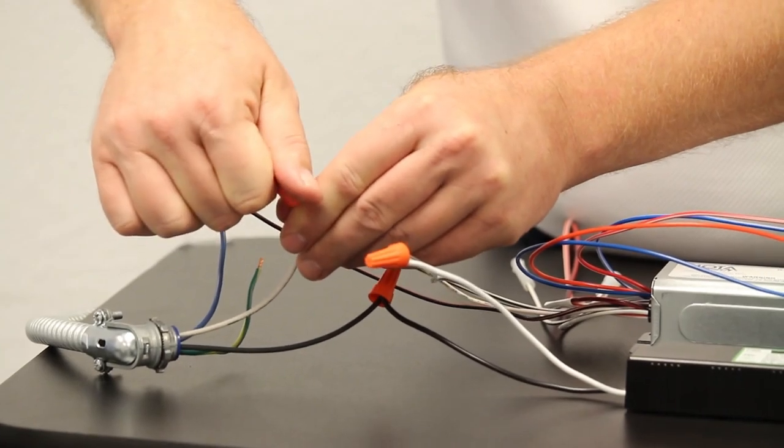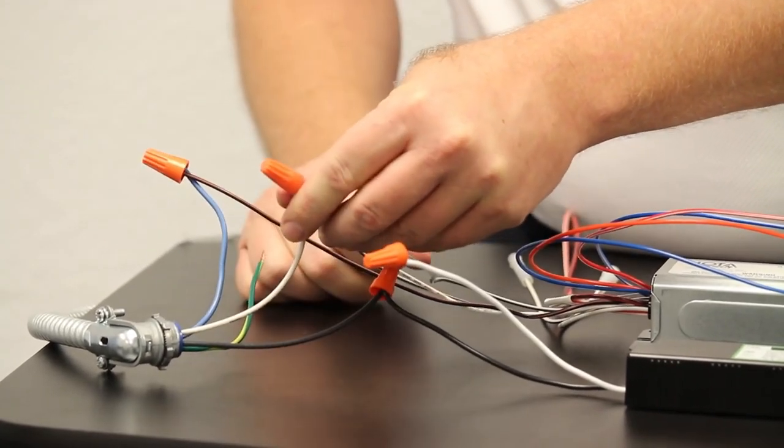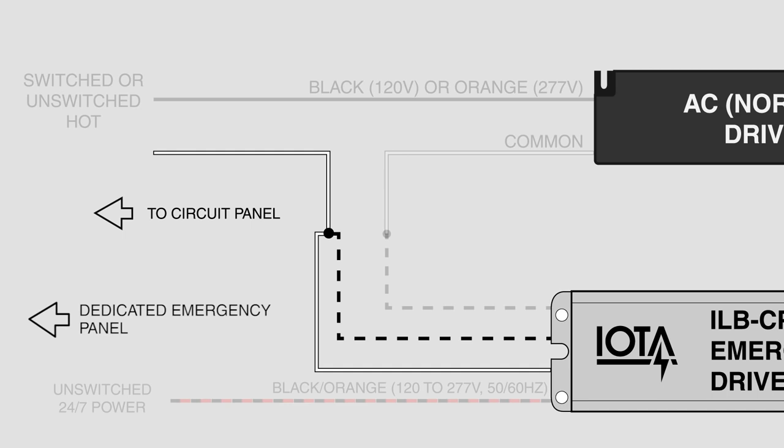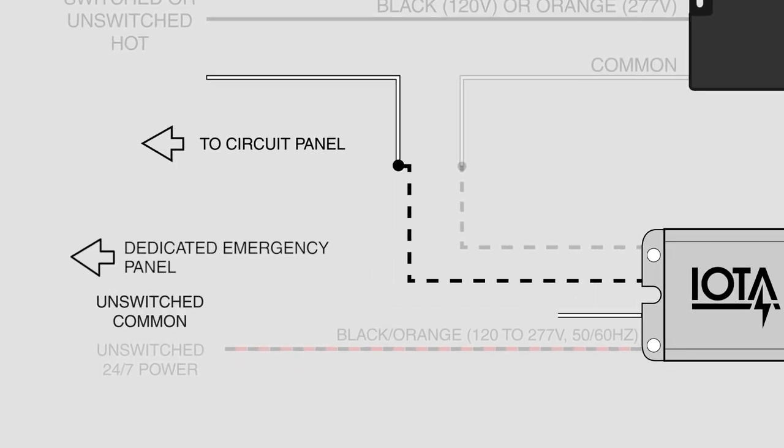If you have an electrical panel that you have run for a dedicated emergency operation, the white wire would go to that panel directly, instead of being connected at the same point that the white-black wire attaches for the normal driver.